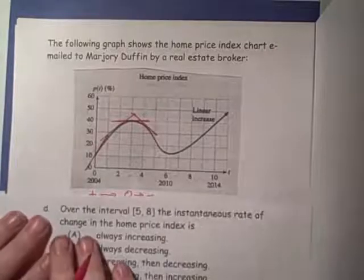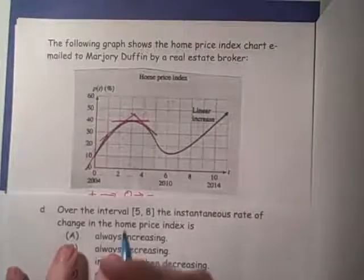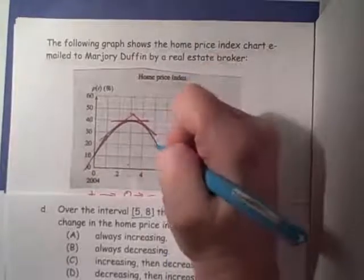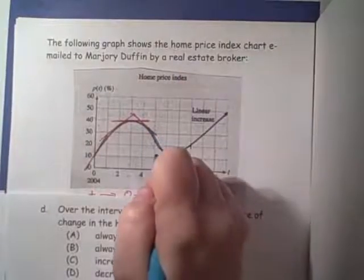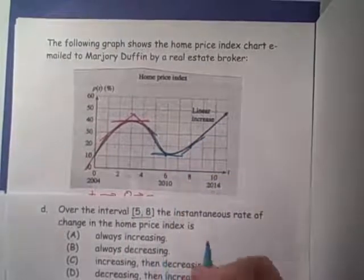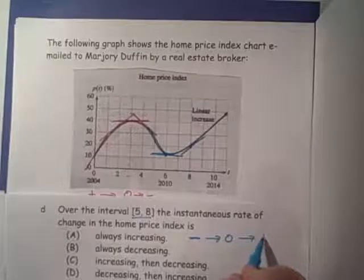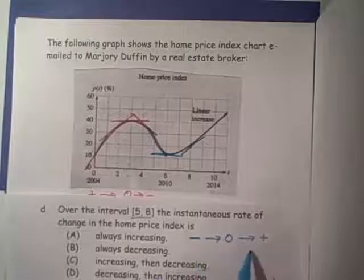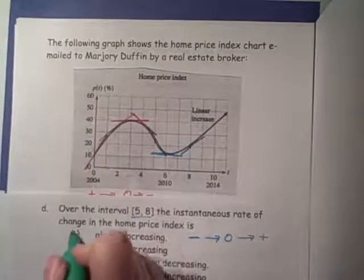Let's look at the interval 5 to 8. At 5, the tangent line has a negative slope. Over at 6, we're getting close to horizontal. At 8, the slope has become positive. So we start out with a negative slope, gradually move to zero, then gradually move positive. If you start with a negative number, go to zero, then go positive, those numbers are increasing. The answer for part D is always increasing.